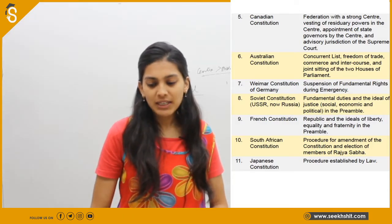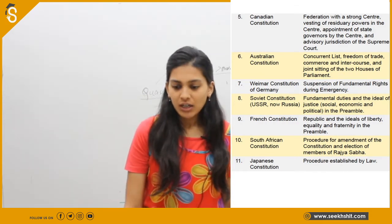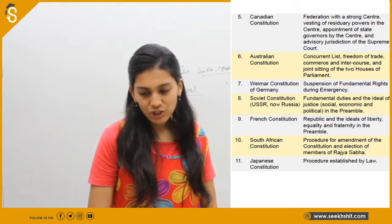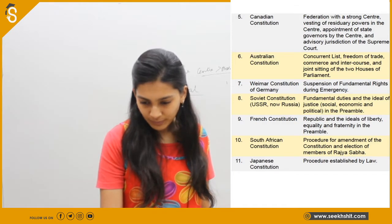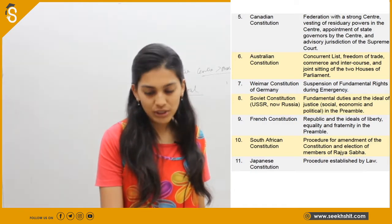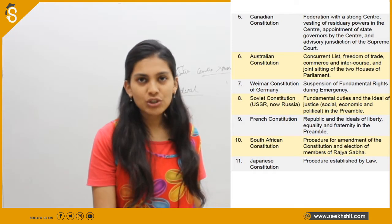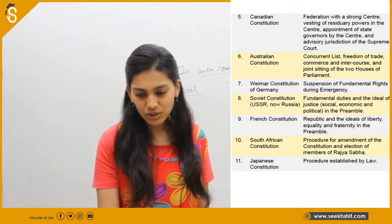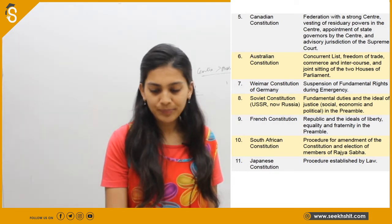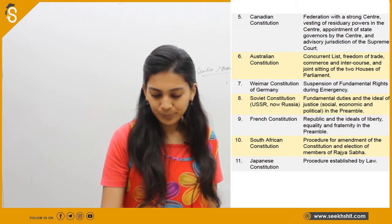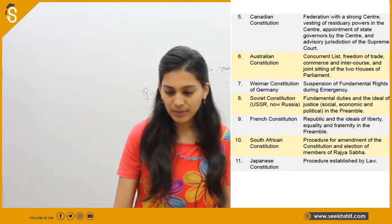India is quasi-federal — neither wholly federal nor wholly unitary — it is a mixture because the center is more powerful than the states, similar to Canada. From the Australian Constitution: concurrent list, freedom of trade, commerce and intercourse, and joint sitting of the two houses. From Germany: suspension of fundamental rights during emergency. From the Soviet Constitution: fundamental duties and ideals of justice in the preamble — social, economic and political. From the French Constitution: republic and the ideals of liberty, equality and fraternity in the preamble. From the South African Constitution: procedure for amendment of the Constitution under Article 368 and election of members of Rajya Sabha. From Japan: procedure established by law. We must memorize this list because these questions can come directly in the exam.